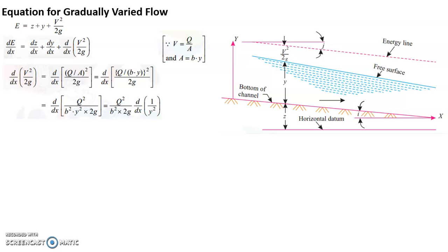Now differentiation of D by DX of 1 by Y square is the next step. So you can see here it's Q square by B square into 2g into differentiation of D by DX of 1 by Y square. Or it is differentiation of Y to the power minus 2 is minus 2 into Y to the power minus 3. So Y to the power minus 3 is 1 by Y to the power 3, and that is what we just written here into DY by DX.